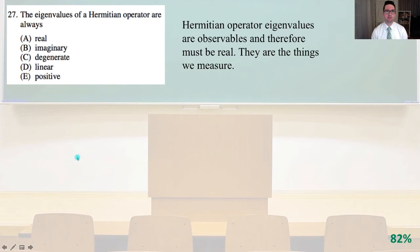Number 27. The eigenvalues of a Hermitian operator are always, well, Hermitian operator eigenvalues are observables and therefore must be real. They are the things that we measure. So that's answer A.